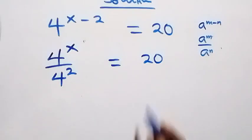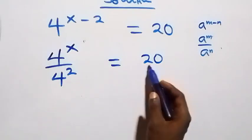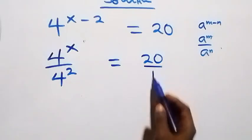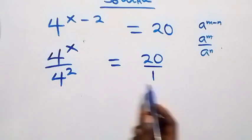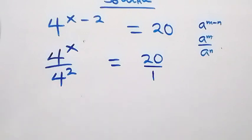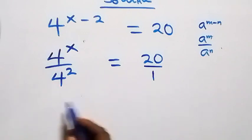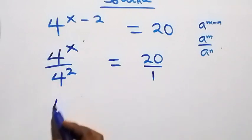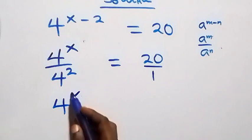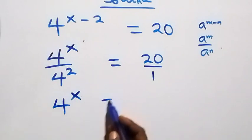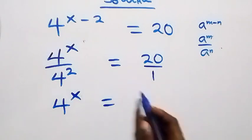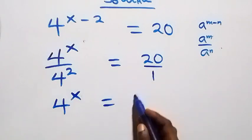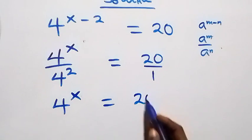We can write this as 20 over 1, and when we cross multiply, 4 raised to power x times 1 gives us 4 raised to power x, which equals 20 times 4 squared.